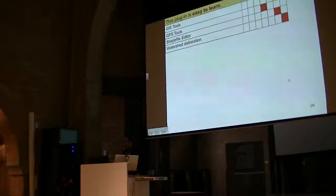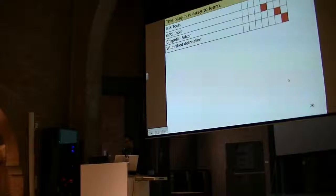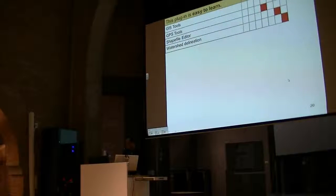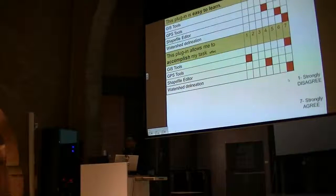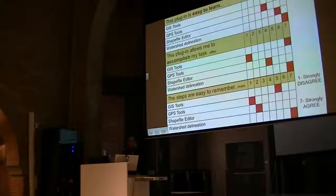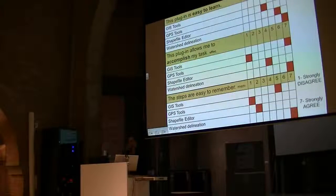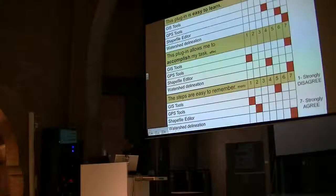For example, in terms of learnability, we gave the statement 'this plugin is easy to learn,' and the people had been working with these plugins for at least a year. The highest scores were for watershed delineation and GIS tools; GPS tools scored around 4. In terms of efficiency — 'this plugin allows me to accomplish my task' — GPS tools got a strongly disagree score of 1, while high scores went to GIS tools and watershed delineation. For memorability — the steps are easy to remember — high scores again for watershed delineation and GIS tools, with low scores for GPS tools and shape file editor.